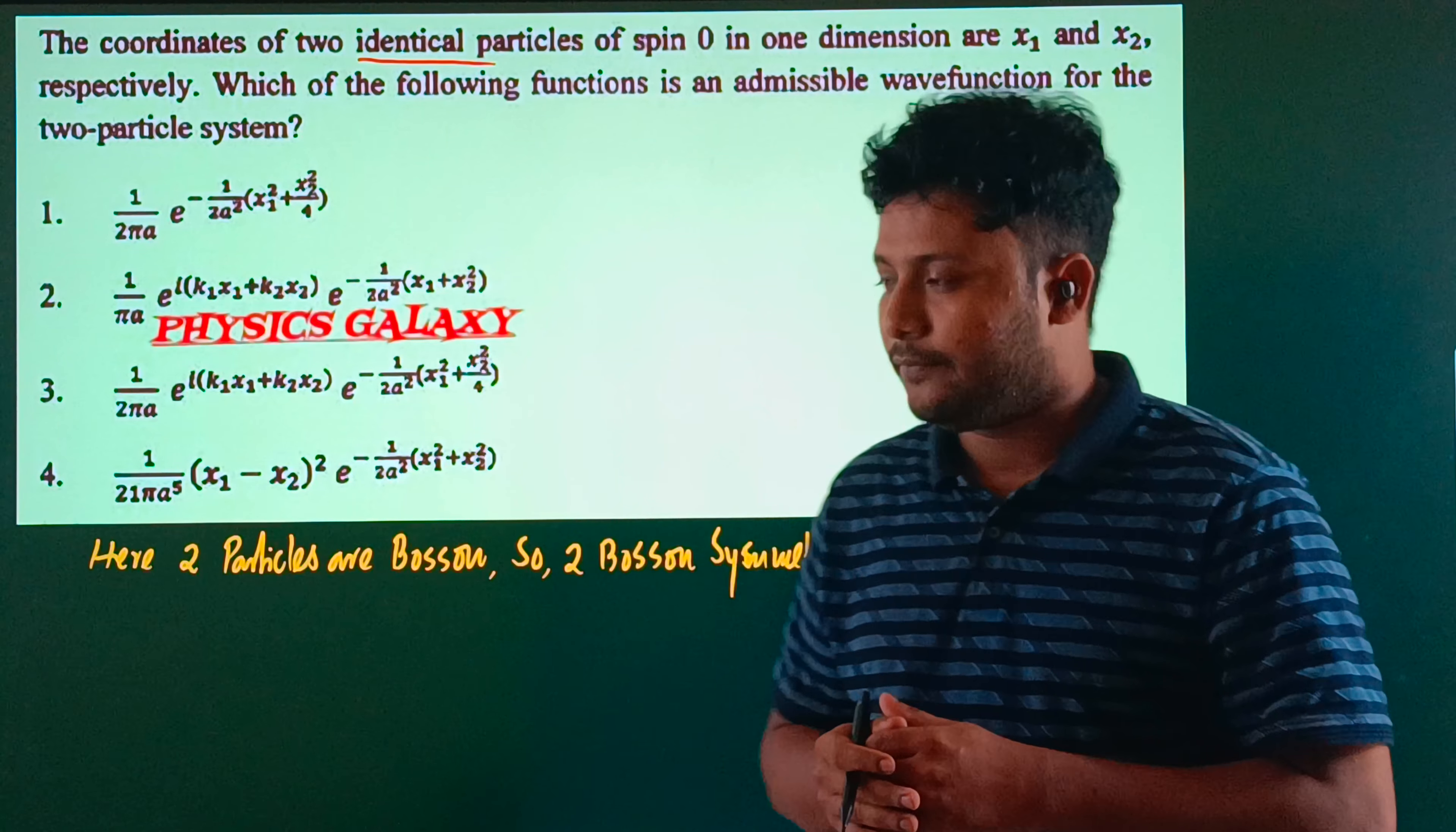We test ψ(x2, x1) by interchanging x2 and x1. For symmetric wave functions, ψ(x1, x2) should equal ψ(x2, x1). When we interchange the particles at positions x1 and x2, we check if the expression remains the same. After checking, this option is symmetric.